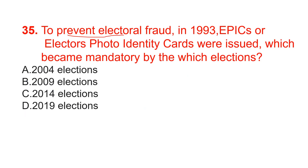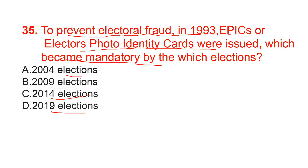To prevent electoral fraud, in 1993, EPICs (Elector's Photo Identity Cards) were issued. These became mandatory by which election? Options are 2004, 2009, 2014, or 2019 elections. The correct option is option A — 2004 elections. However, Ration cards have been allowed for election purposes in certain situations.